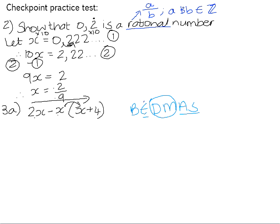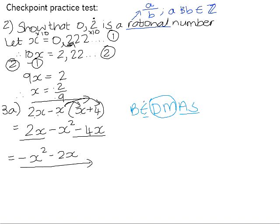So we actually need to start by doing the distributive law. So we'll have 2X, negative X times X is negative X squared, negative X times positive 4 is negative 4X. We can now collect together the like terms of 2X and negative 4X, and that leaves us with negative X squared minus 2X.